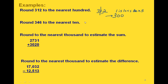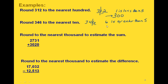How about rounding 346 to the nearest 10? Here's our tens place, so we draw the line right there, which means we're looking at the 6. Since 6 is greater than 5, we add 1 to the 4, making it 5. So we get 350, and anything to the right of our line becomes a 0.